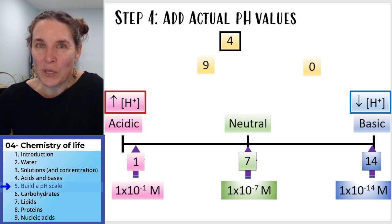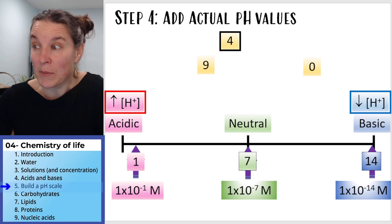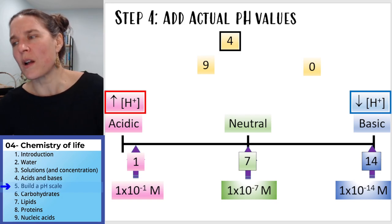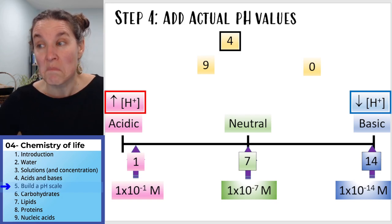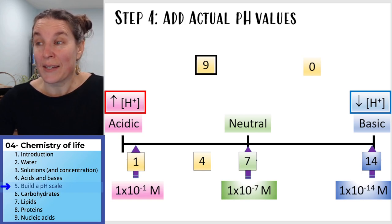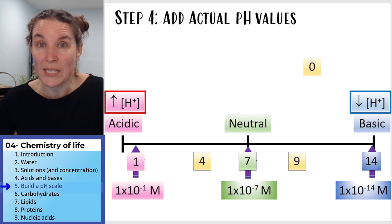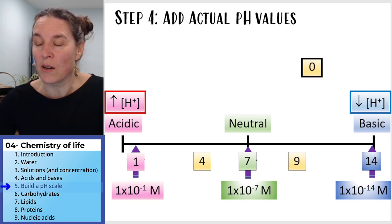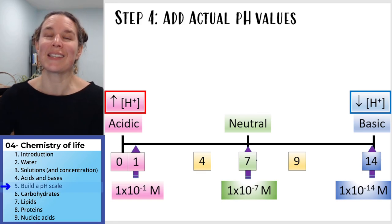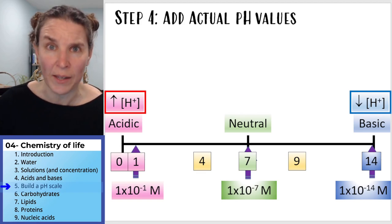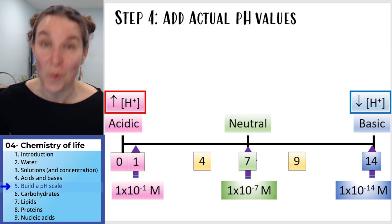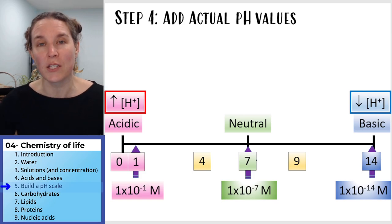Where would you put four? We don't have a number to match, so we estimate — it's definitely going to be on the acidic side. How about nine? On the basic side. And what about zero? Totally on the acidic side — 1×10⁰ is one, meaning there's one mole of hydrogen ions in one liter of solution, and the pH is zero.